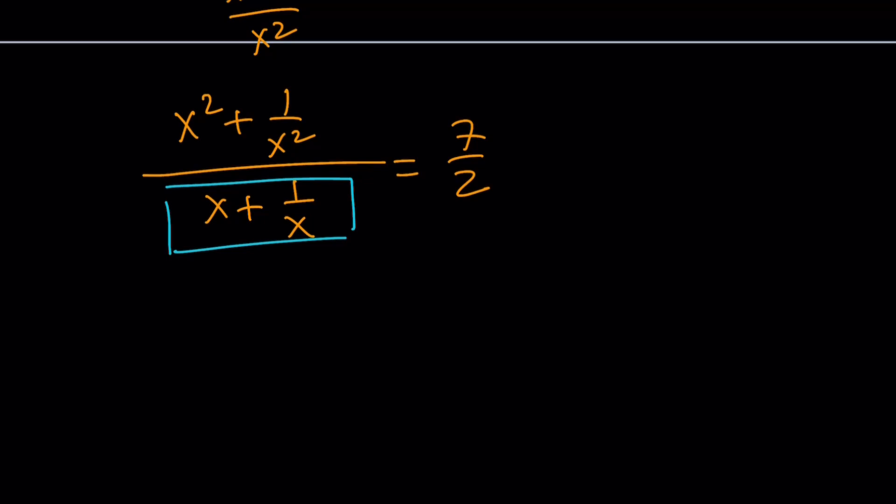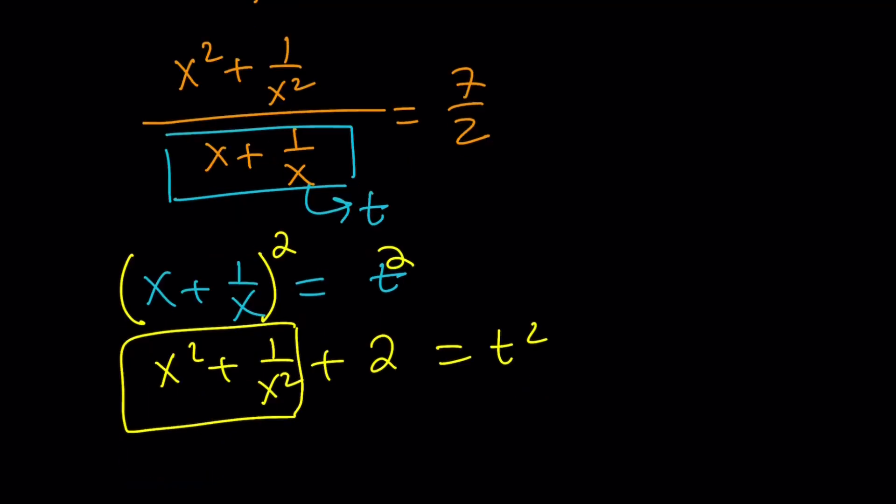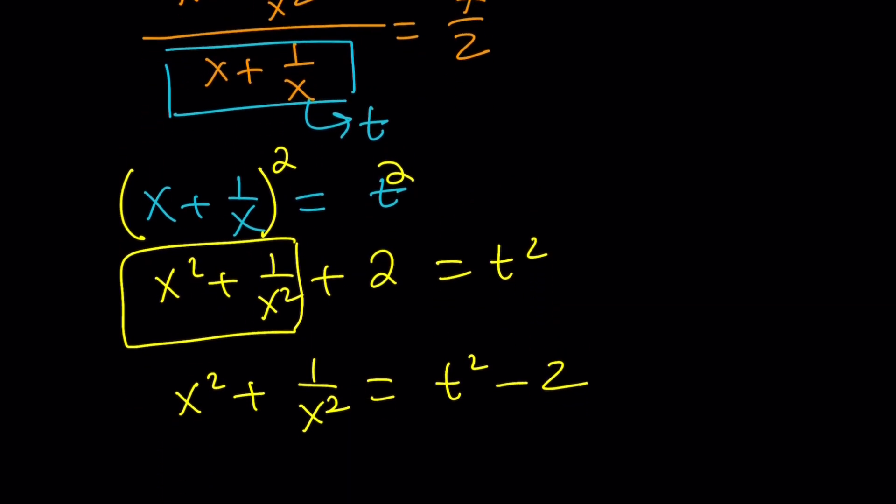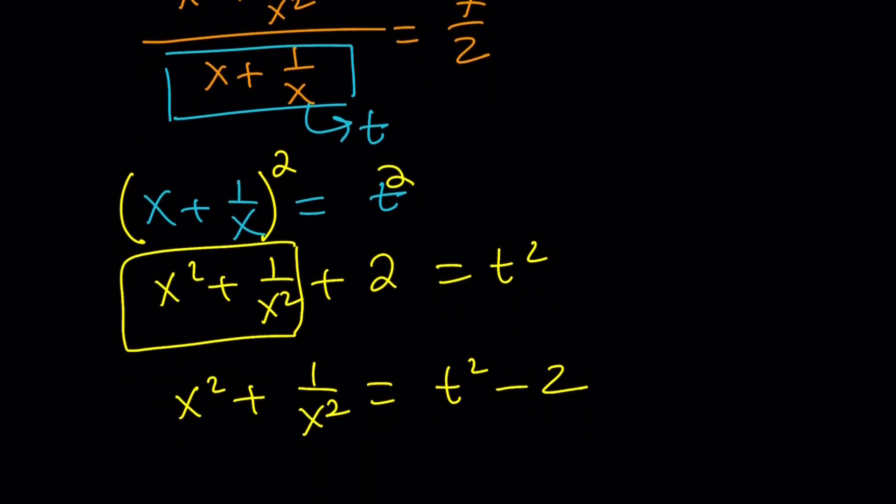Now we can go ahead and call this something. Obviously I'm going to use substitution a lot because it's awesome and it's very helpful. That's probably why it's awesome. So let's go ahead and call this t. So what can I get from t? I can square both sides. And that's going to give me x squared plus 1 over x squared plus 2 equals t squared. And since I need this, let's go ahead and subtract 2 from both sides. That's the power of substitution. And we use this a lot with polynomials and rational expressions like this.